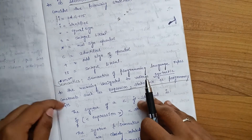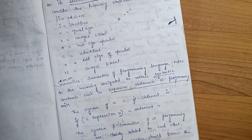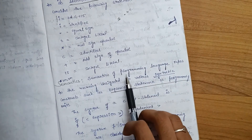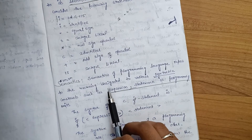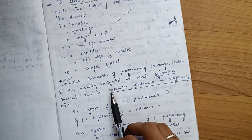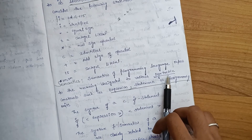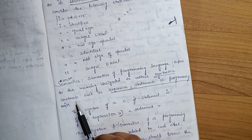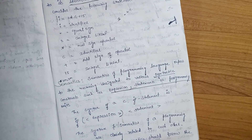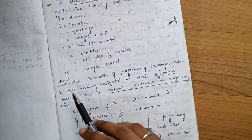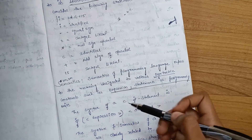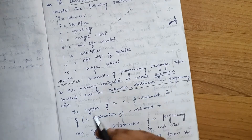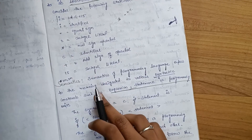Next we are going to discuss semantics. Semantics of a programming language refers to the meaning designated to various syntactic constructs, such as expressions, statements, or programming units.